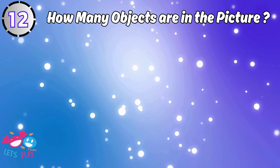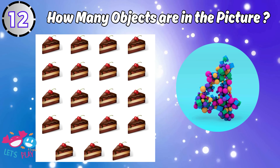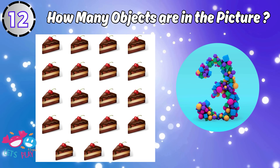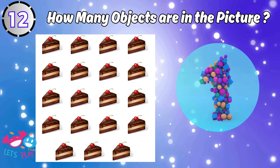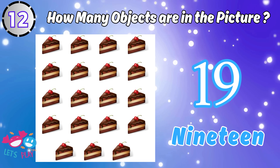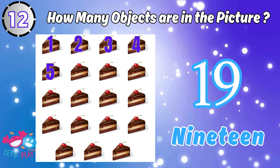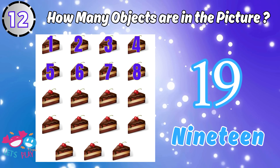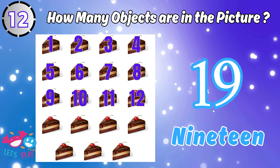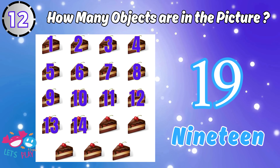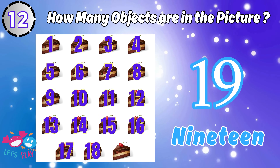How many objects are in the picture? Five, six, seven, eight, nine, ten, eleven, twelve, thirteen, fourteen, fifteen, sixteen, seventeen, eighteen, nineteen.